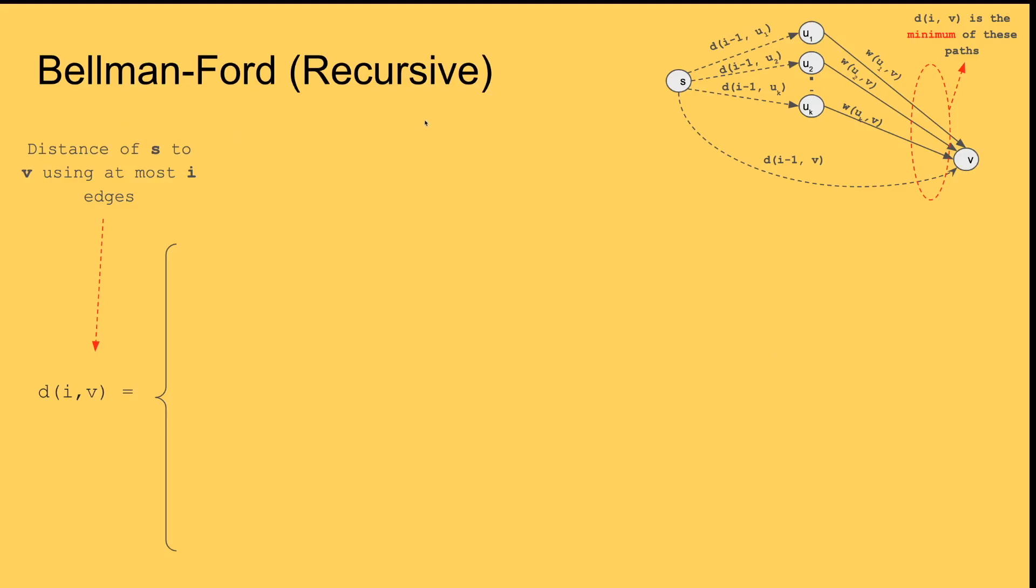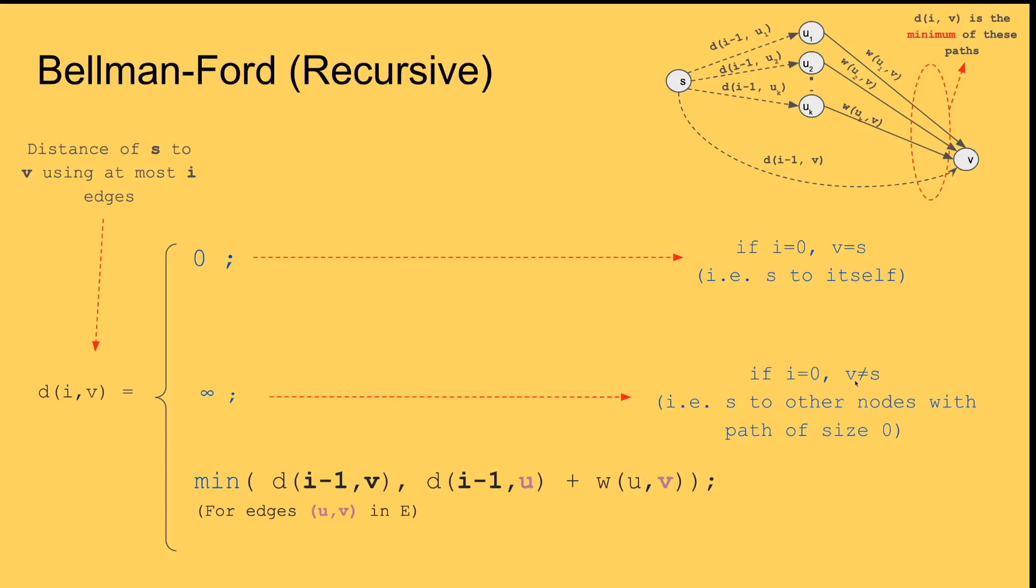So let's write this as a recursive function. d(i,v) is the minimum of what we found before for v using i minus one, and then the minimum of this value and coming to one of the predecessors using i minus one plus the cost of going from the predecessor to v. What are our base cases? If i equals zero, that means you're not allowed to use any edges. If v and s are the same, that means going from s to itself, obviously the distance is zero. But if you're not allowed to use any edges and v and s are not equal, we set the shortest path to infinity. And that's it, that's all that is to this recursive function for Bellman-Ford shortest distance.